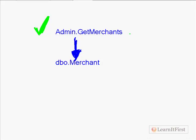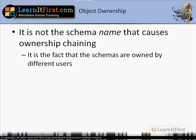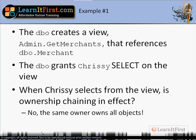Where a lot of people get confused: it's not the schema name that causes SQL Server to check the permission again - it's the fact that the schemas are owned by different users. We can have two different schemas owned by the same user, and that is not ownership chaining.